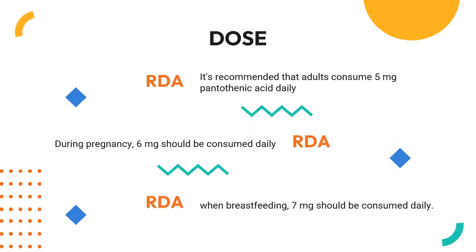Dose: It is recommended that adults consume 5 mg of pantothenic acid daily. During pregnancy, 6 mg should be consumed daily. When breastfeeding, 7 mg should be consumed daily.